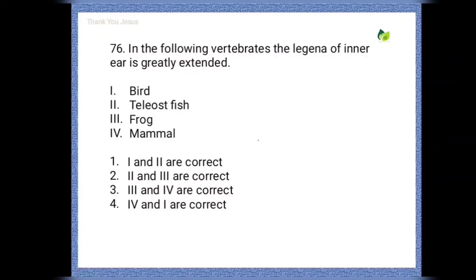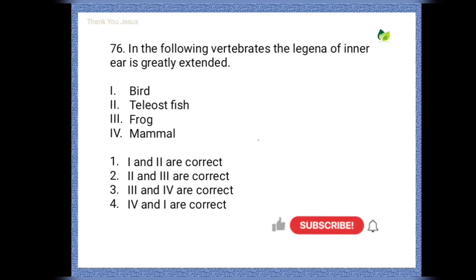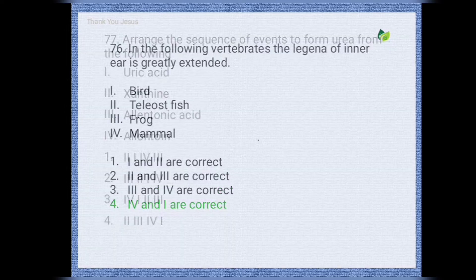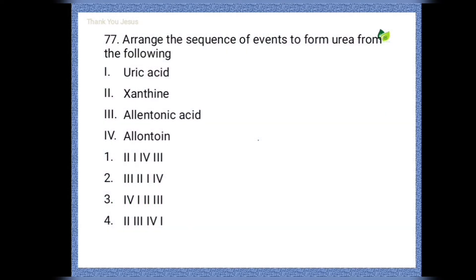In the following vertebrates, the lagena of the inner ear is greatly extended. Options are: bird, teleost fish, frog, mammal. The correct option is the fourth one — that means bird and mammal contain a greatly extended inner ear.